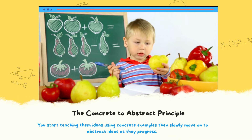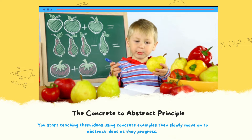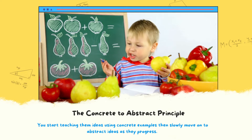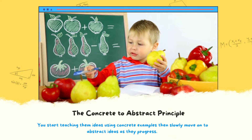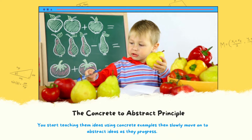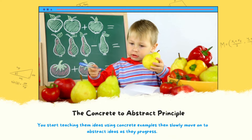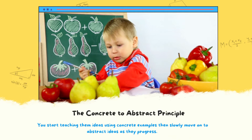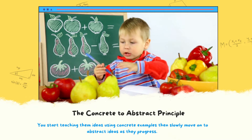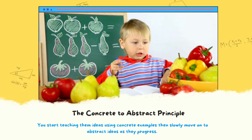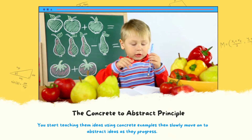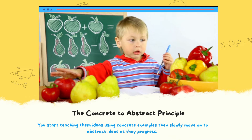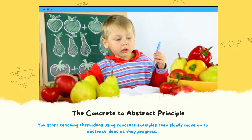The Concrete to Abstract Principle: This principle capitalizes on the visual-spatial learning style of children. You start teaching them ideas using concrete examples, then slowly move on to abstract ideas as they progress.